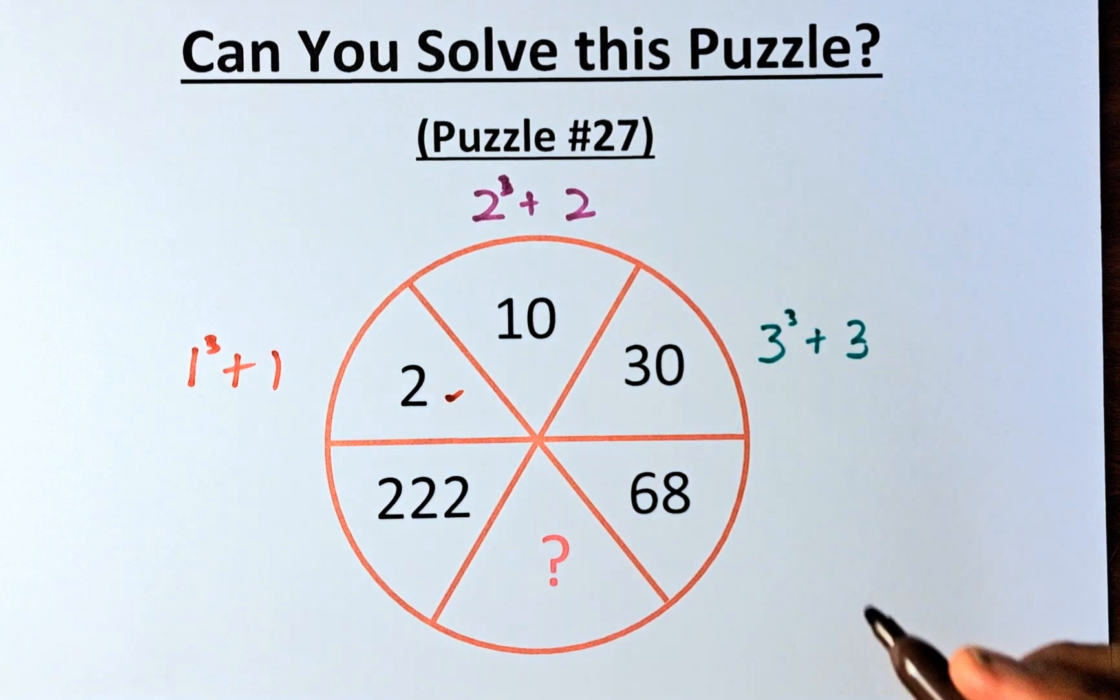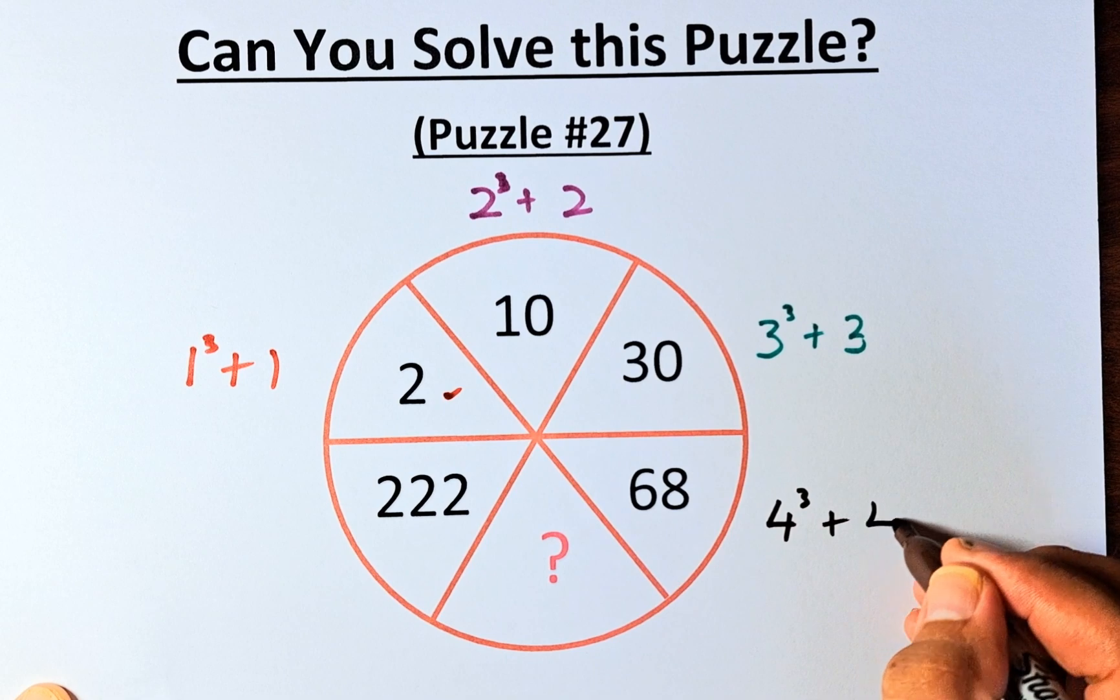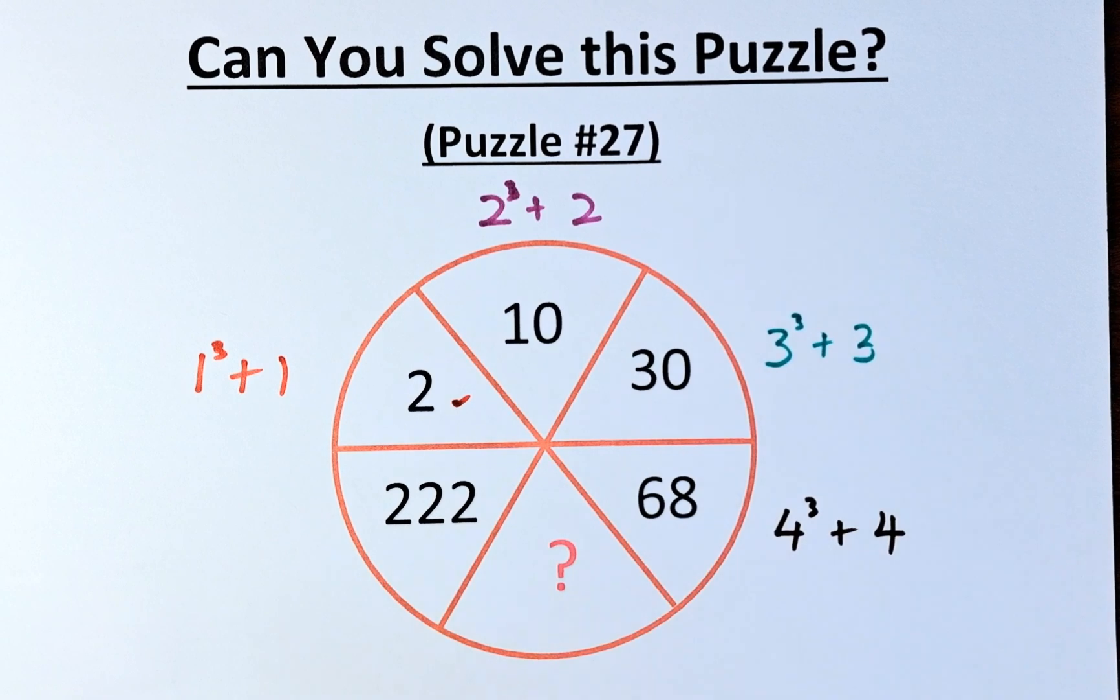So what about 68? 68 is 4 cube plus 4. 4 cube is 64 and 64 plus 4 will give us 68.